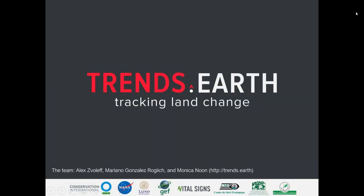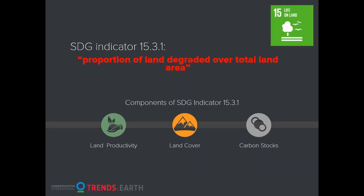Hello, and in this short tutorial, I'm going to walk you through the basic functions of Trans.Earth. Trans.Earth is a tool for analyzing land conditions. You can identify land degradation in the form of three sub-indicators: changes in land cover, changes in land productivity, and changes in organic carbon.